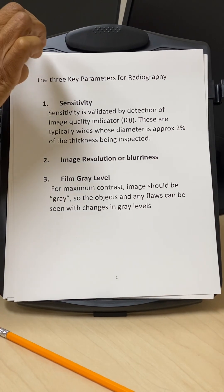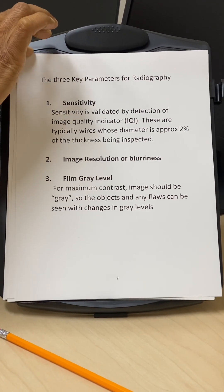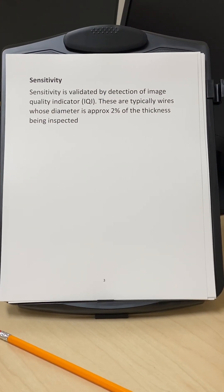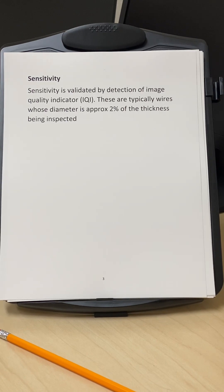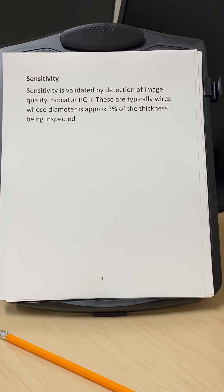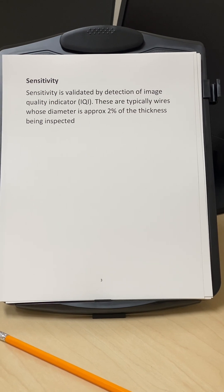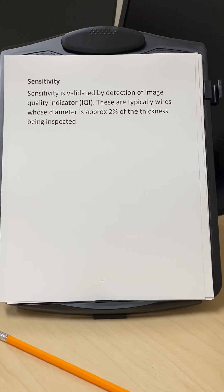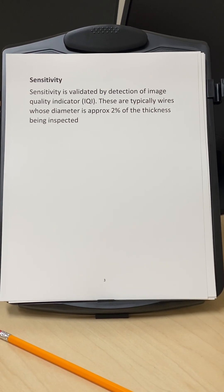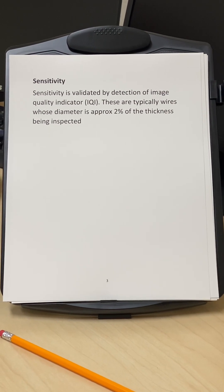So what are these three key parameters and we will compare them for film as well as for digital. Sensitivity is validated by the detection of the wires and depending on the thickness of the part we select the essential wire or the essential hole in the penetrometer and make sure we have good detection of the IQI wire or the hole.